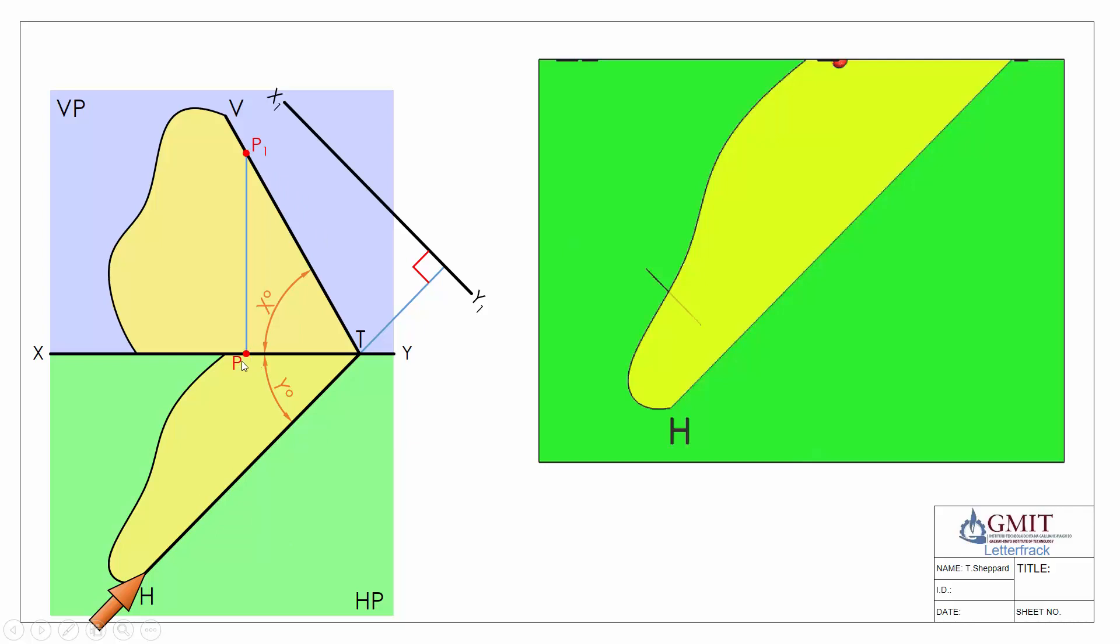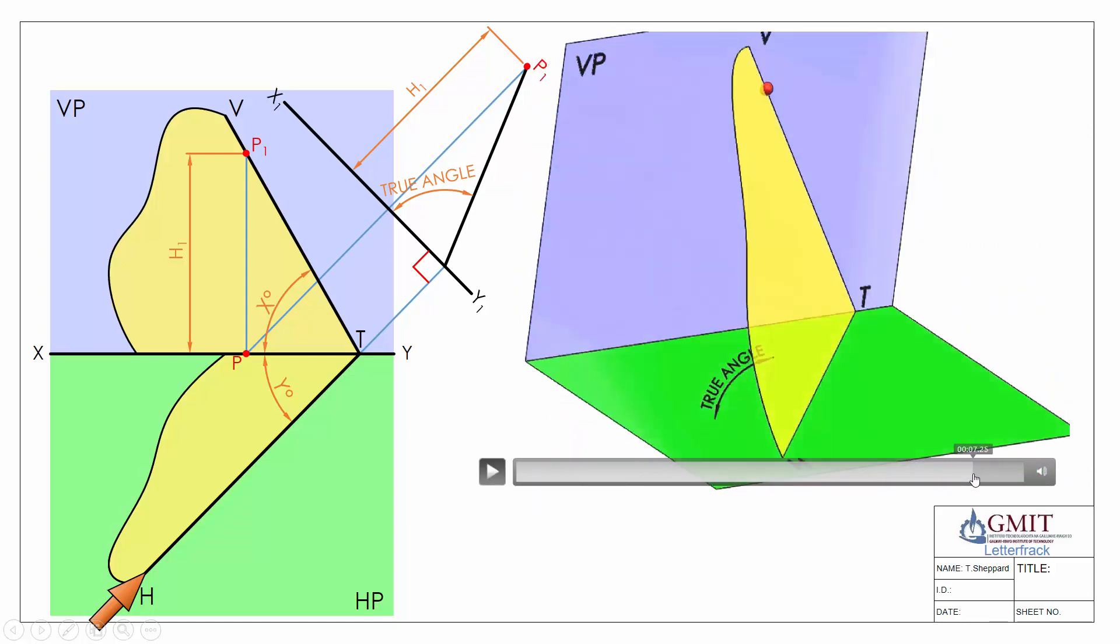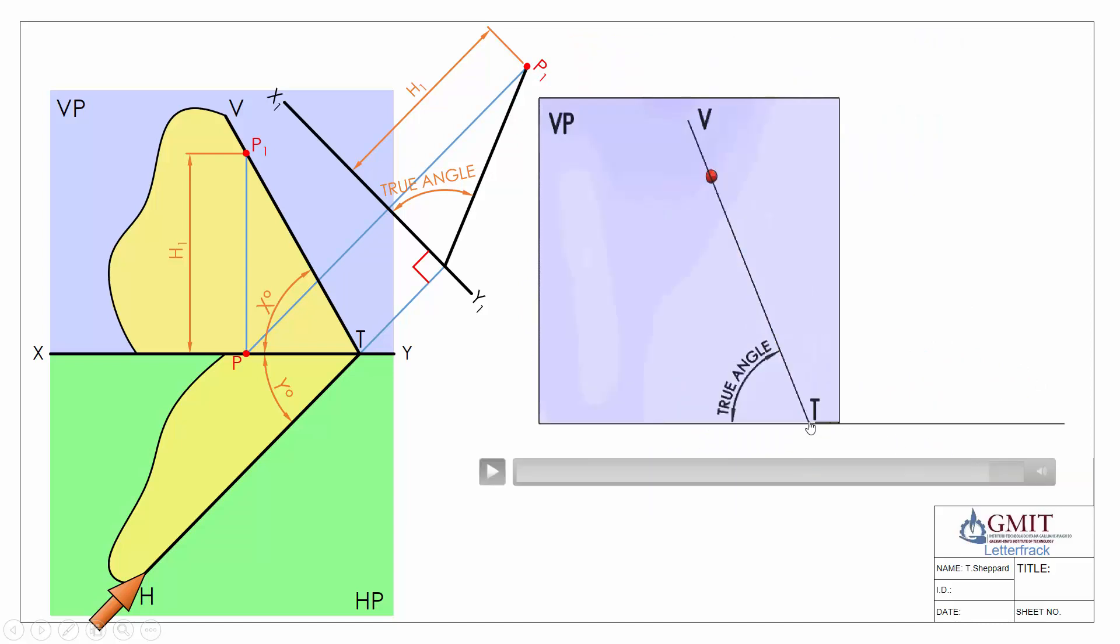Once we've located P in our plan view, we project him along in line with our line of sight. We're able to take our height from our back two views and step it off, giving us P in elevation. Now we've got our two points which we can join together to give us the edge view of our plane. We can see the exact same thing happening in our 3D version. There's our edge view of our oblique plane giving us the true inclination.